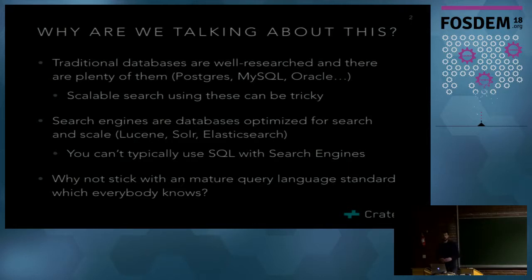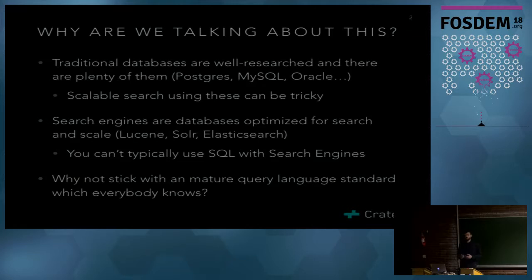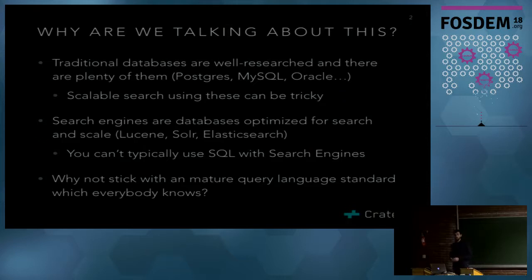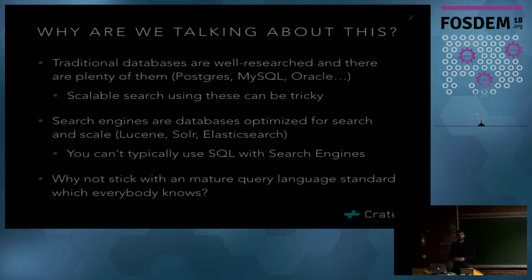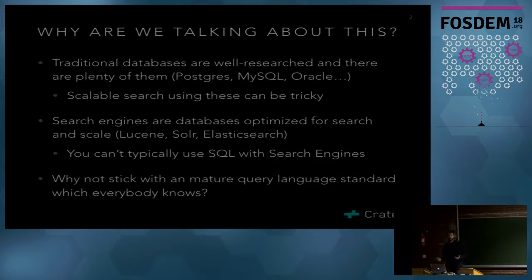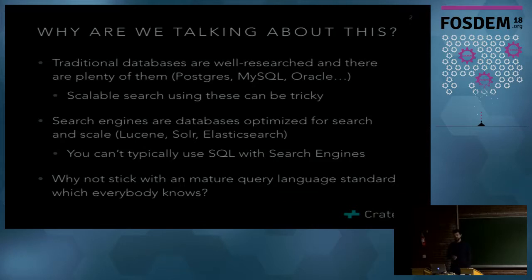Although they are making progress in that direction. On the other side there are search engines, which are kind of like databases but optimized for search and scale. We have libraries like Lucene for very efficient local searching of documents, and distributed frameworks like Solr and Elasticsearch which use Lucene for distributed search capability. But the downside is you can't typically use SQL with these search engines — and SQL is a pretty mature standard, been around since the 80s. Everybody knows SQL, so why drop that?